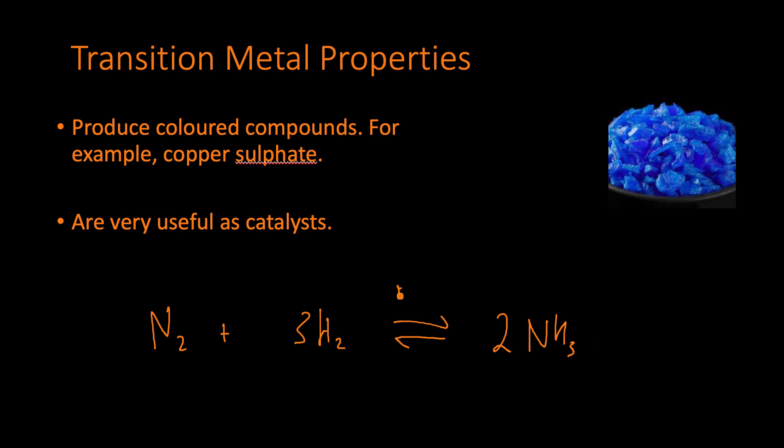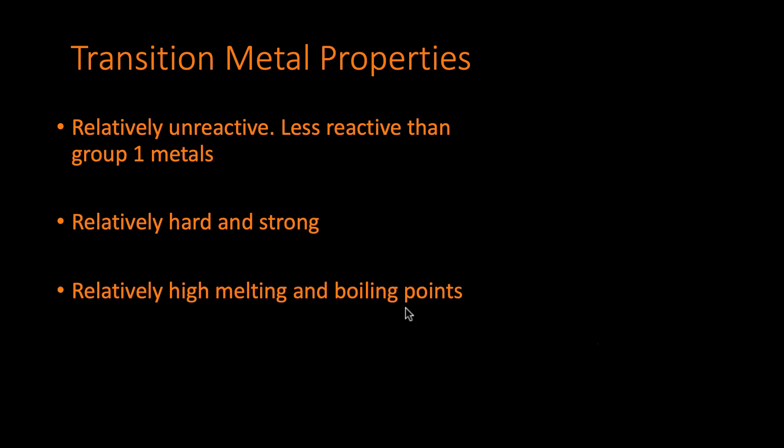It's a reversible reaction making two NH3, which is ammonia. And importantly this requires an iron catalyst. Iron is a transition metal. Iron is a catalyst for this reaction. It's very important if we want to carry out the Haber process to any kind of reasonable rate. And that's really it. So to summarize.